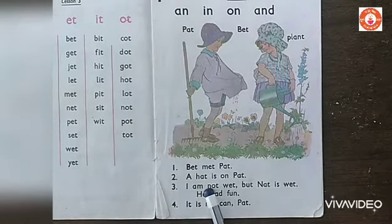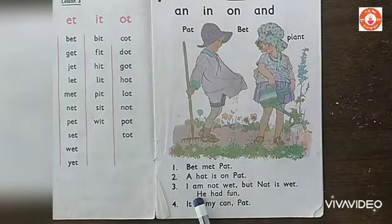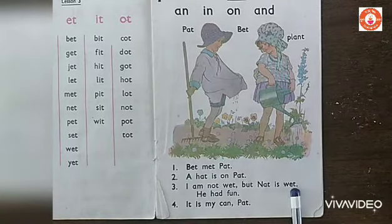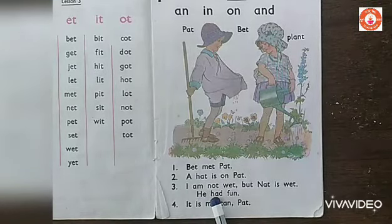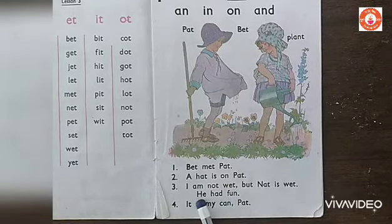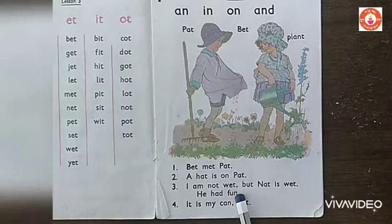So: I am not wet. But Nat is wet. Next sentence. He — see, this is the beginning of a new sentence. Here there is a full stop, that means the previous sentence gets over. This is a new sentence. He had fun. Full stop. That means the sentence gets over.